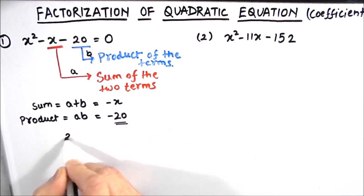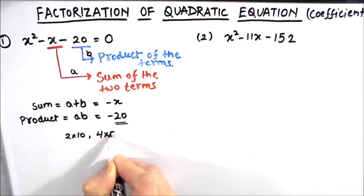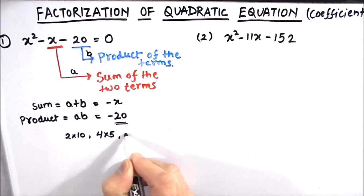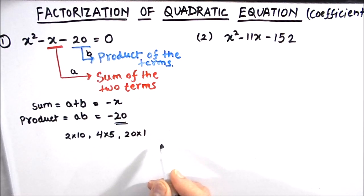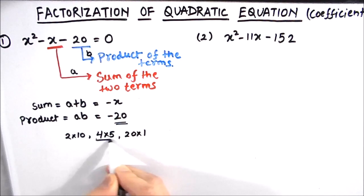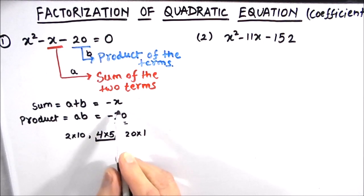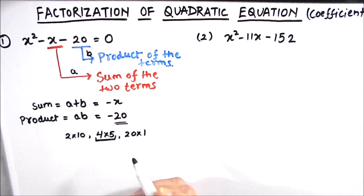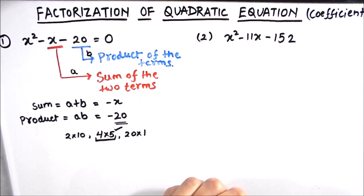So factors of 20 are 2 and 10, 4 and 5, and 20 and 1. Out of all these factor pairs, we see that 4 times 5 is a good choice because 4 times 5 is 20, and 5 minus 4 will give us 1, which we need for the second condition. So we are going to pick this factor pair: 4 and 5.